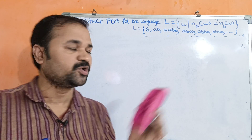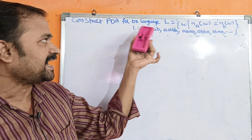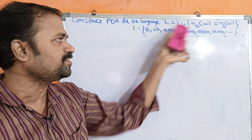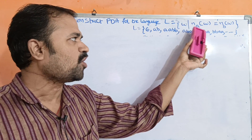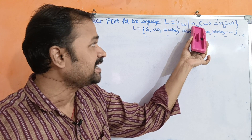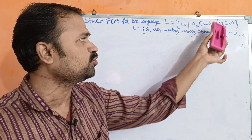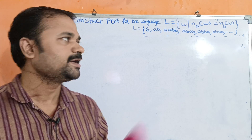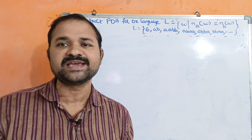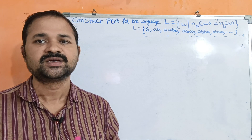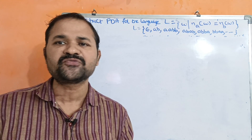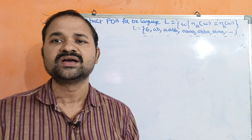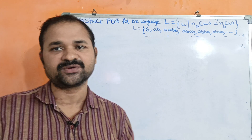Let's see this example: Construct a PDA for the language L = {w | N_A(w) = N_B(w)}, where W means the string, N_A stands for number of A's. So the number of A's in the string is equal to the number of B's in the string.